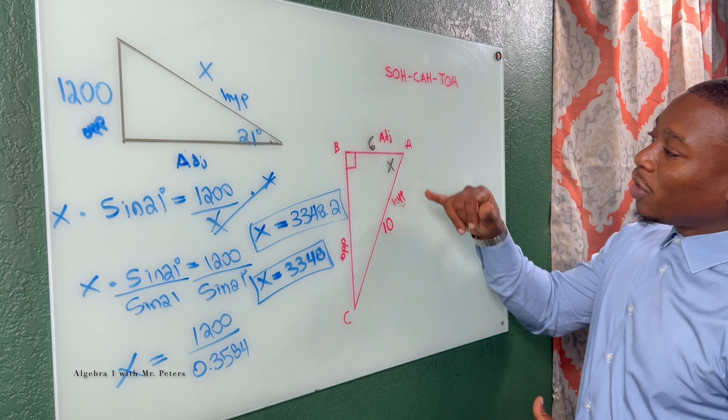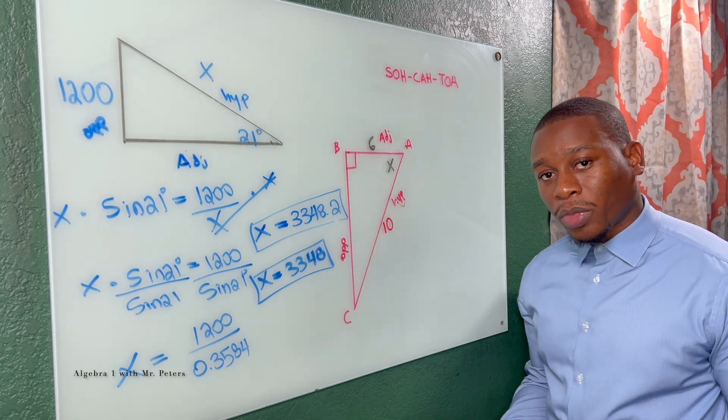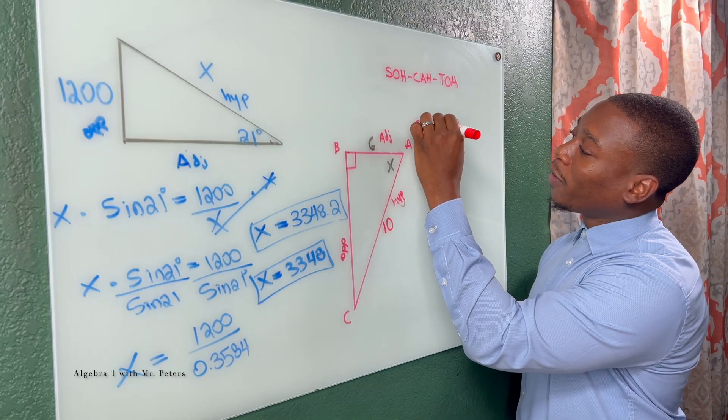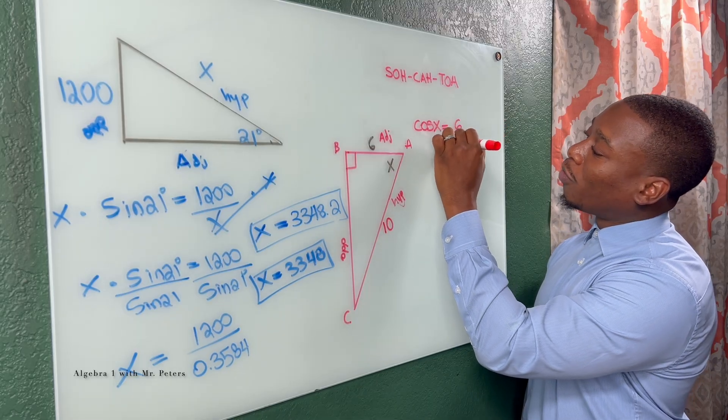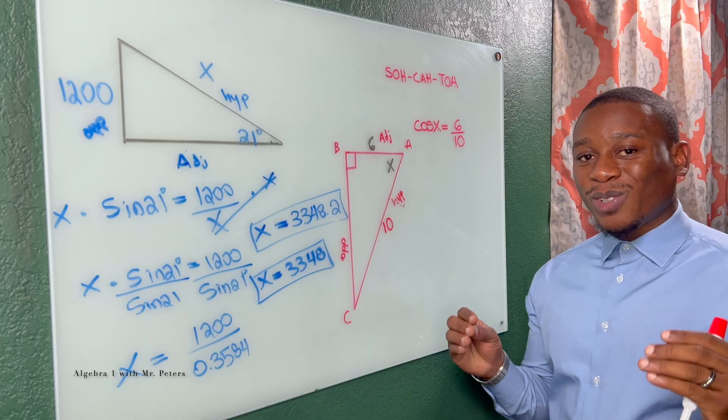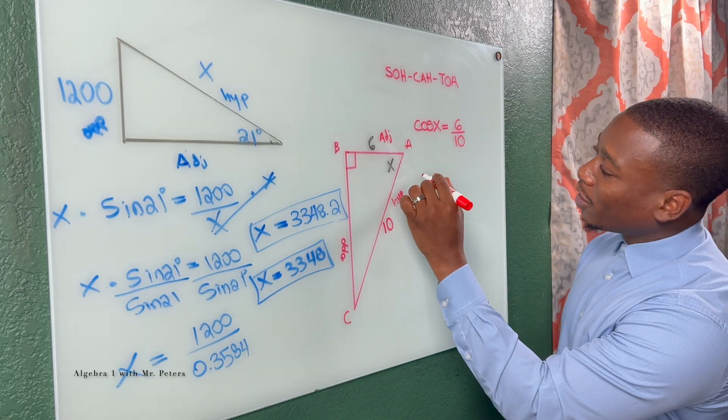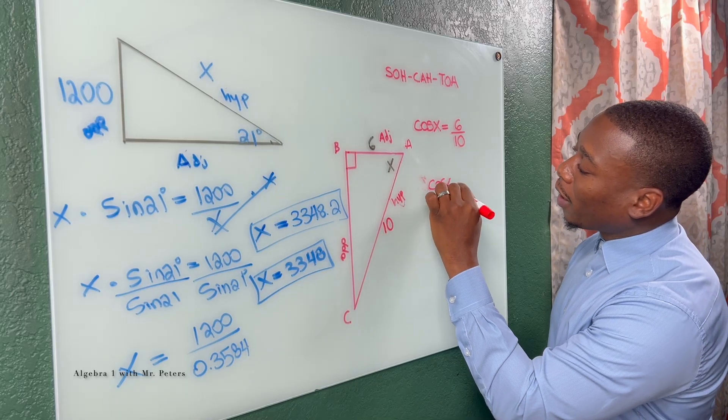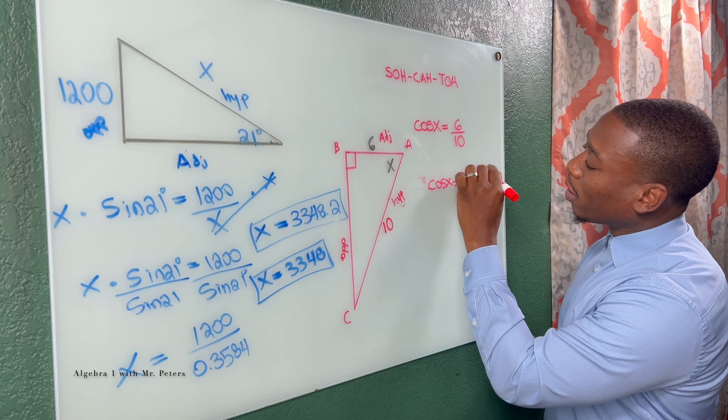So based off this relationship with adjacent and hypotenuse, I'm going to use cosine. So I know the cos of X is going to be equal to what? Adjacent 6 over 10. Now, this is where things get a little tricky. So let's say I simplify this to a decimal. So now I have the cosine of X is equal to 0.6.